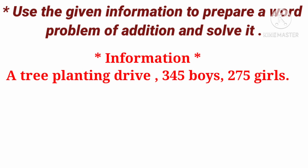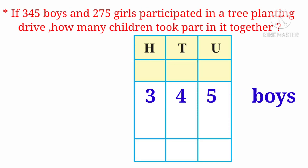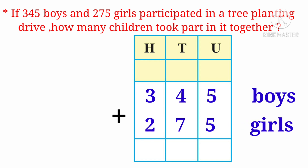The information given is: a tree planting drive — 345 boys and 275 girls. From this information, we can make an example like this: If 345 boys and 275 girls participated in a tree planting drive, how many children took part in it altogether? Let's solve it: 345 plus 275.